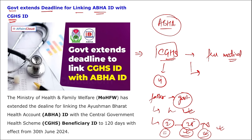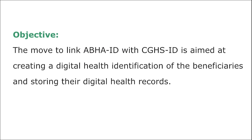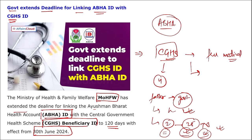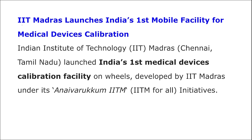CGHS is a health scheme where the treatment amount is refunded by the government, and medical tests are done at subsidized rates. The government has extended the deadline for linking ABHA ID with CGHS ID by 120 days, now extended to 30th of June 2024. The objective is to create a digital health identification of beneficiaries and store their digital health records.